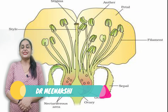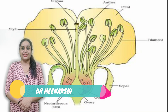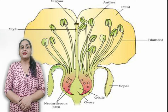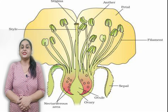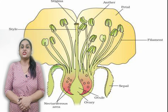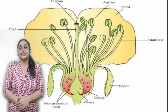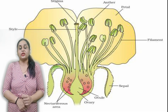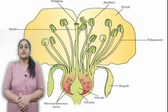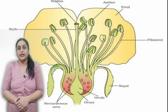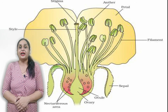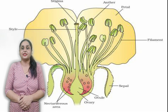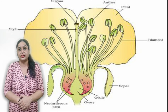Hello my dears, this is Dr. Meenakshi and today we are going to talk about NCRT Biology Chapter 2 which is Sexual Reproduction in Flowering Plants. In this particular video we are going to talk about general introduction and the reproductive part of plants and the parts of it we are going to study.